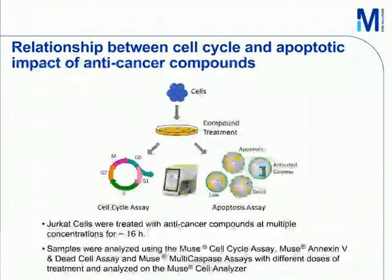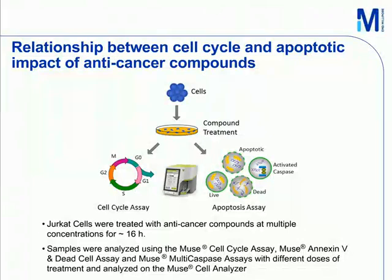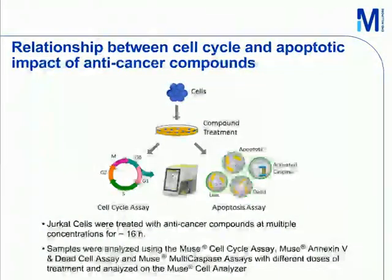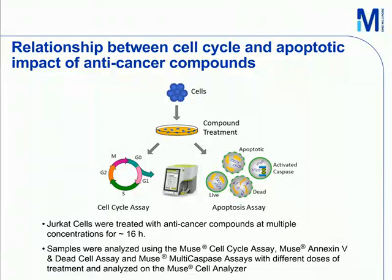Going back to our studies—here we look at how these assays were utilized to study the relationship between cell cycle and apoptotic impact of anti-cancer compounds. Cells were treated with different concentrations of anti-cancer compounds, all treatments were for 16 hours, and then the same sample was divided and analyzed by the Muse cell cycle assay, the Muse Annexin V and dead cell assay, and the Muse multi-caspase assay. The information was then put together to get a deeper understanding of the parallel impacts of compound treatment.